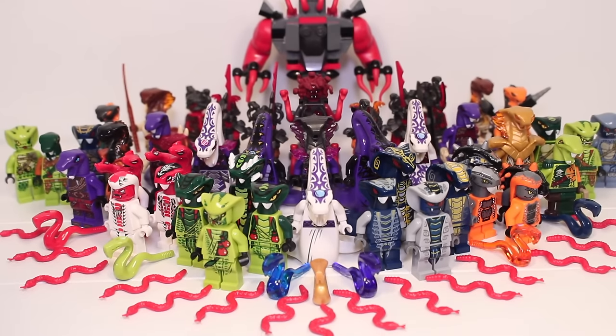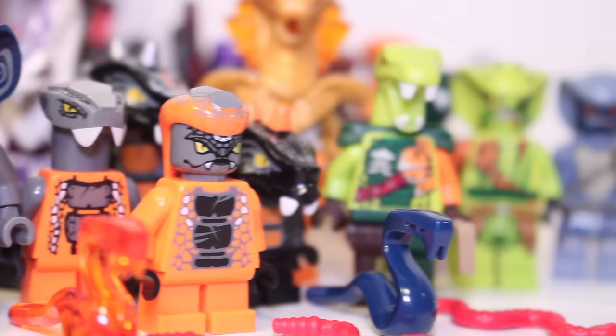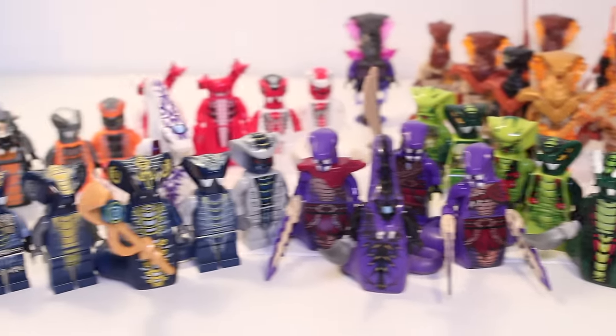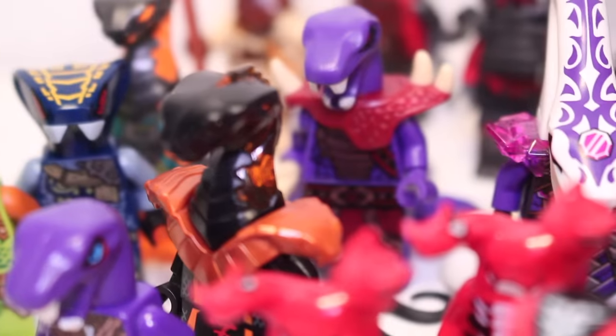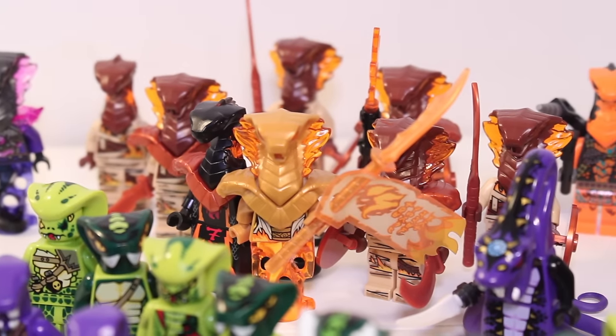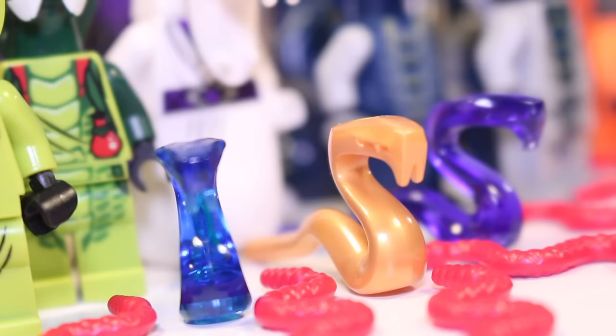The Serpentine, one of Ninjago's most iconic foes and a massively important piece of its history. In this video we'll be taking a look at every Serpentine minifigure ever made, from 2012 to now. Everything from the Hypnobrai to Vermillion, Pyro Vipers to Core Snakes, and the giant snakes that have accompanied them too.